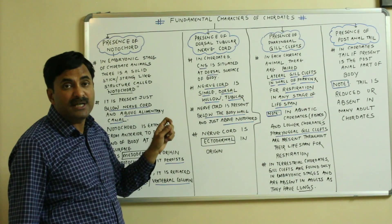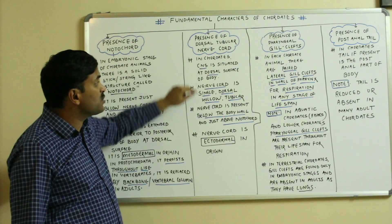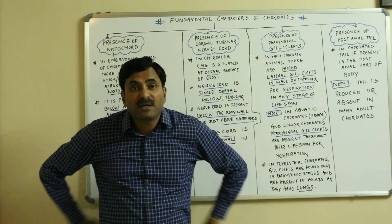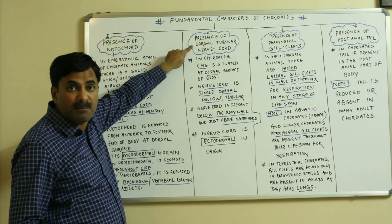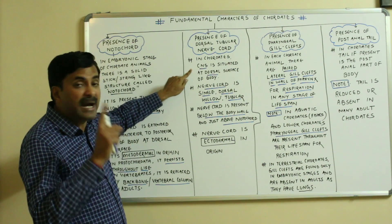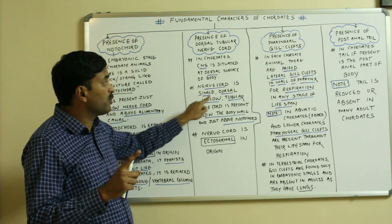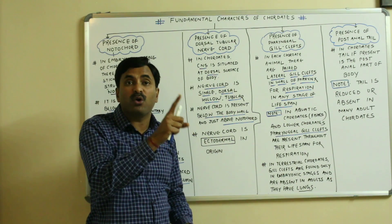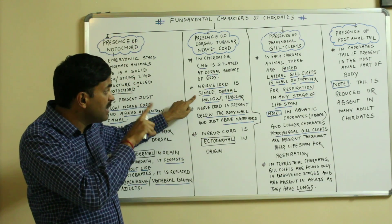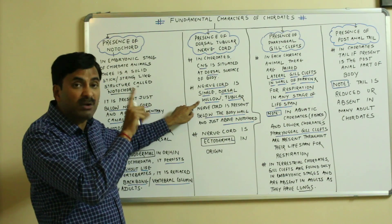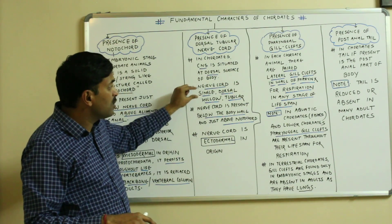The second characteristic is the presence of the dorsal tubular nerve cord. It is also a very important feature of the chordates — the central nervous system is situated at the dorsal surface of the body. The back portion is the dorsal surface. So the position of the nerve cord is dorsal, and this nerve cord is always single, dorsal, hollow, and tubular. If we compare with non-chordates, they have a double nerve cord, a ventral nerve cord, and a solid nerve cord — but in chordates, the nerve cord is single, dorsal, hollow, and tubular.